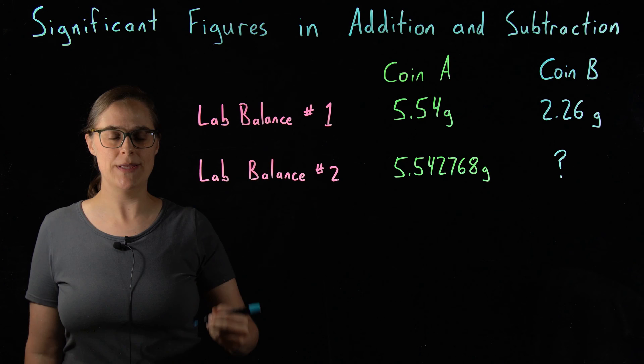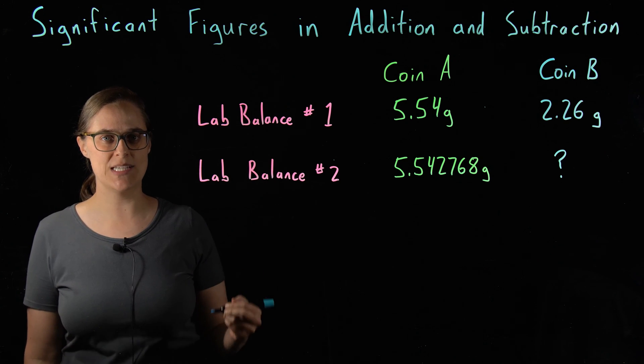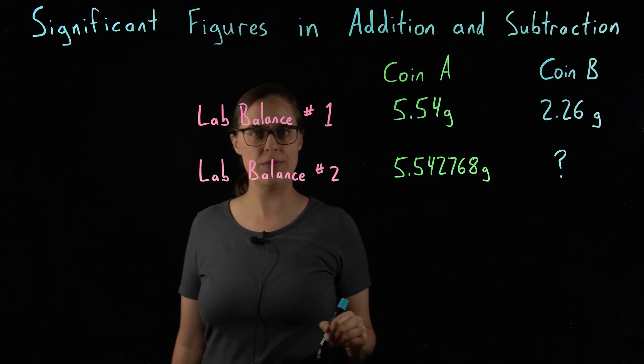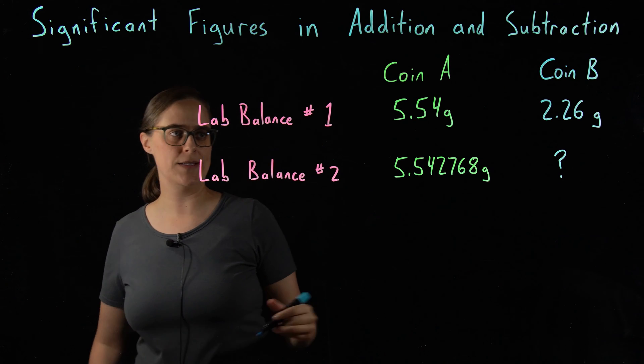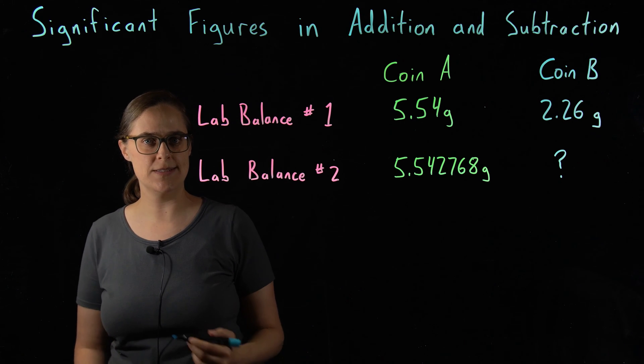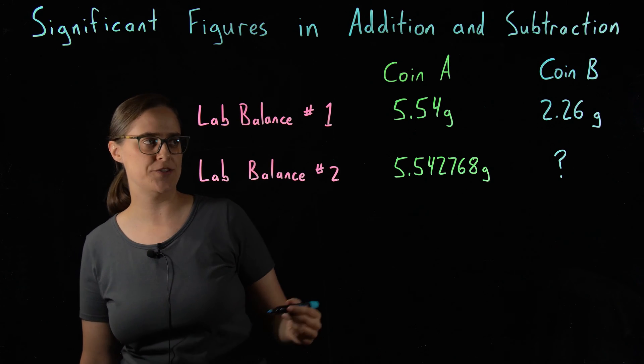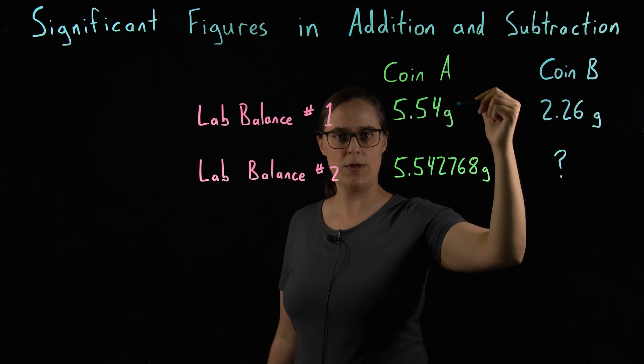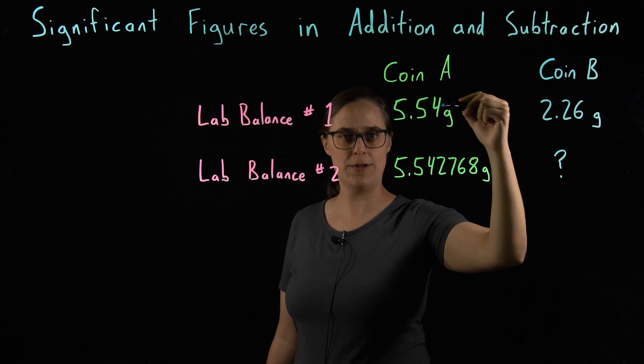Let's do an example problem. Our goal is to find the sum of the mass of two coins. So we have coin A and coin B. We also have two different lab balances. Lab balance 1, this is an inexpensive lab balance that does not give us very much precision. So using lab balance 1, the mass that we measured for coin A was 5.54 grams.